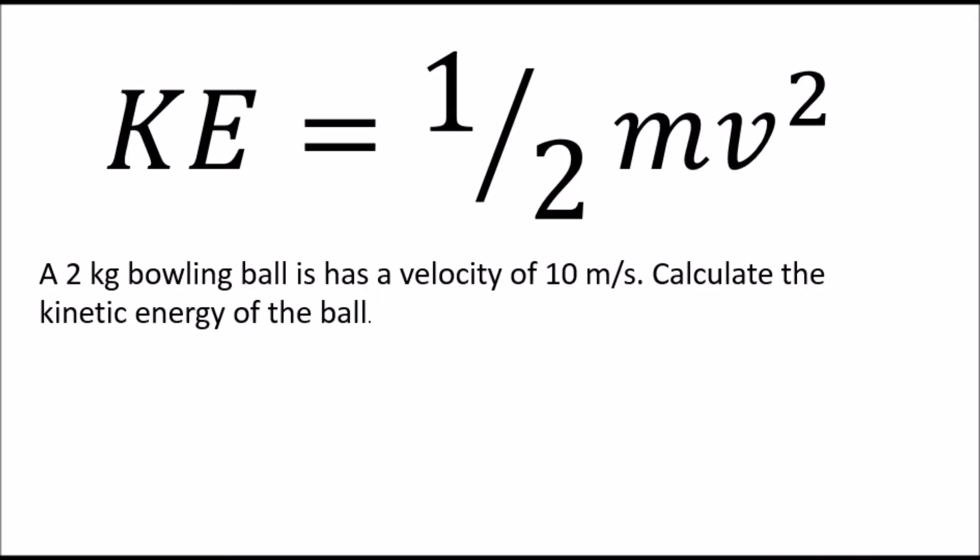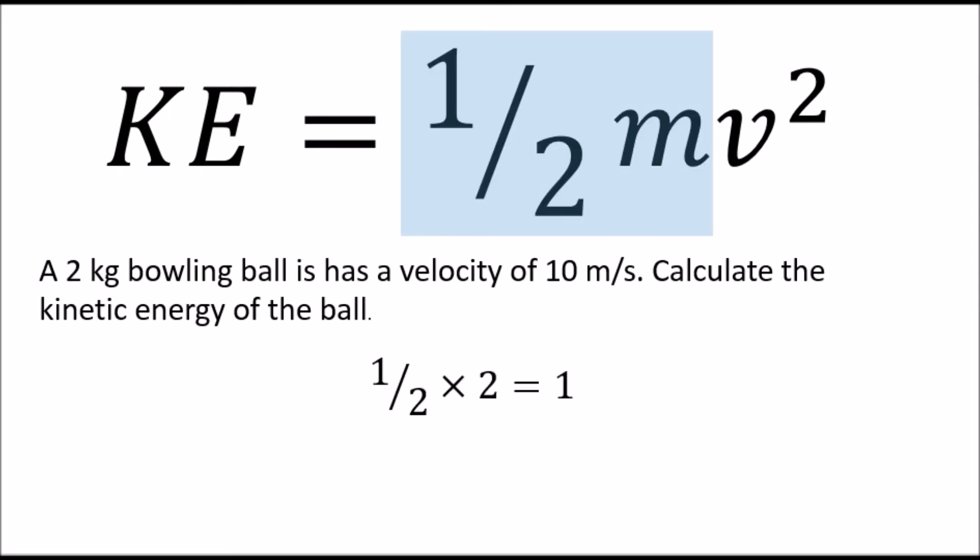Right. Let's finally end up looking at the kinetic energy equation. So we've got more than three variables here. KE, kinetic energy, is a half mv squared, a half of the mass times the velocity squared. I'll go through an example. A two kilogram bowling ball has a velocity of 10 meters per second. Calculate the kinetic energy of the ball. Okay. So first of all, you do this half m bit.